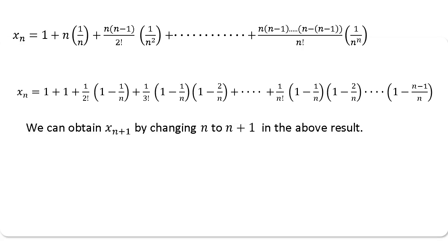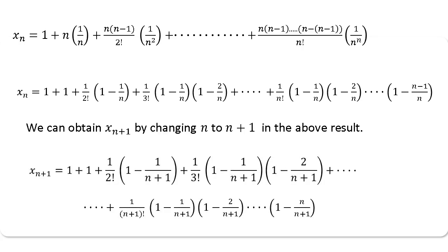Now, you can obtain xn+1 just by replacing n with n+1 in the above result. So we got xn+1 by simply replacing n by n+1 in xn. This is the result of xn+1.